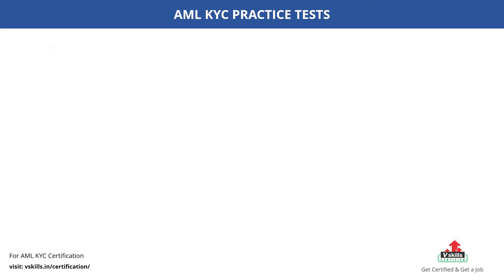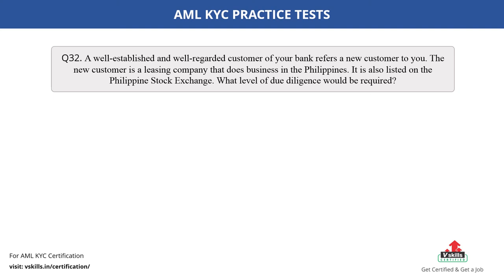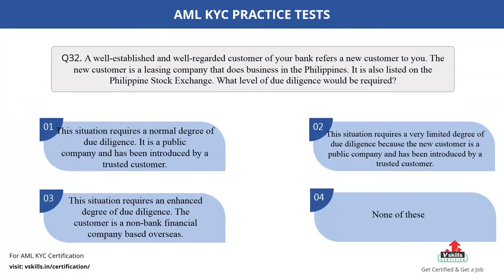Question number 32. A well-established and well-regarded customer of your bank refers a new customer to you. The new customer is a leasing company that does business in the Philippines. It is also listed on the Philippine Stock Exchange. What level of due diligence would be required? The options are: A. This situation requires a normal degree of due diligence — it is a public company and has been introduced by a trusted customer; B. This situation requires a very limited degree of due diligence because the new customer is a public company and has been introduced by a trusted customer; C. The situation requires an enhanced degree of due diligence — the customer is a non-bank financial company based overseas; D. None of these. The correct answer is option C.